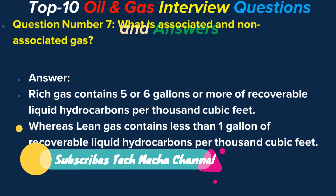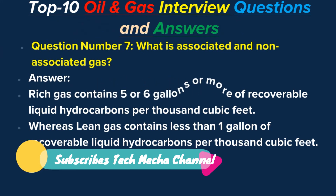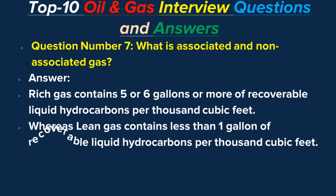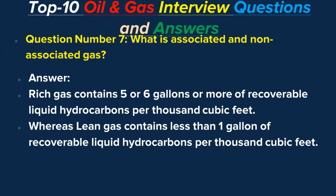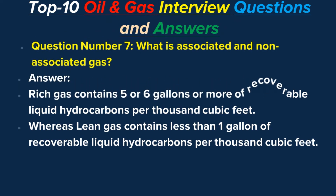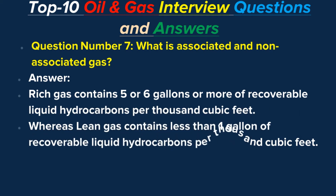Question number seven: What is associated and non-associated gas? Answer: Associated gas is natural gas found in crude oil reservoirs, either dissolved or in conjunction with crude oil deposits, and is also called oil well gas. Non-associated gas is natural gas found in reservoirs separate from crude oil wells and is also called dry gas.